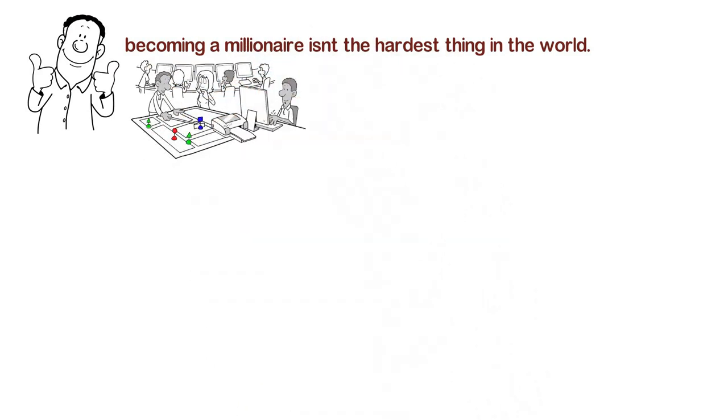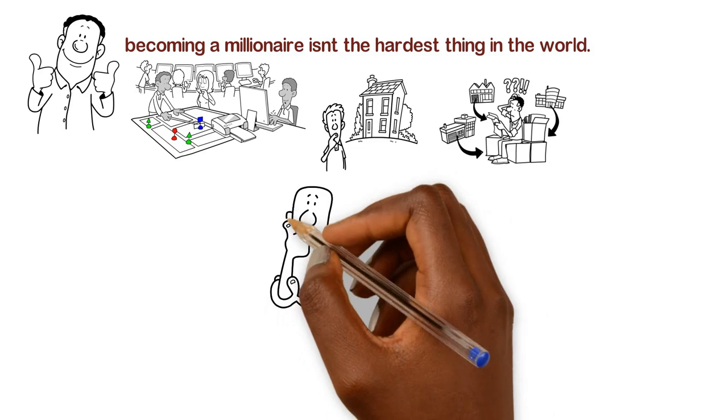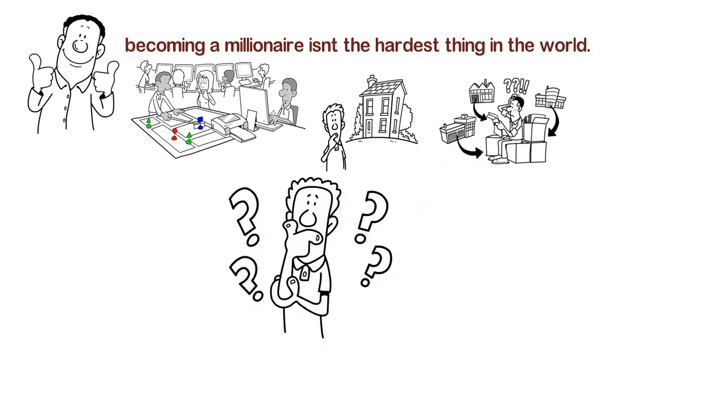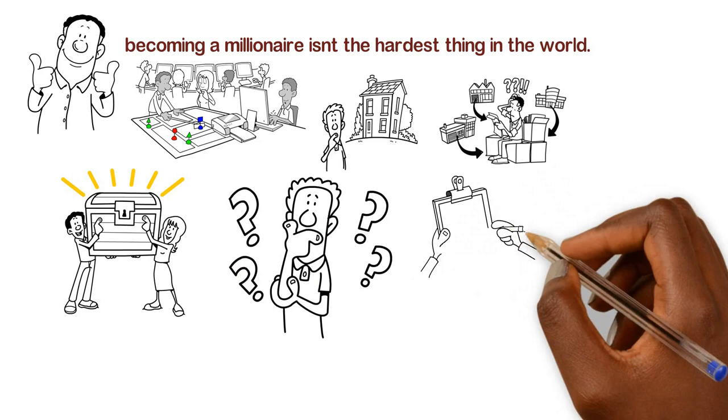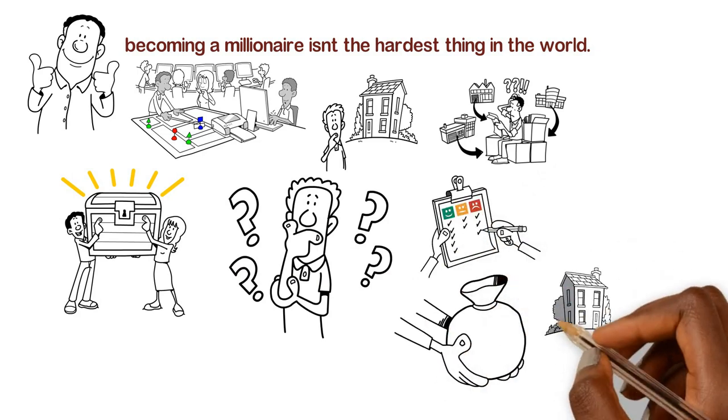So as it turns out, becoming a millionaire isn't the hardest thing in the world. It simply requires planning well, living below your means, and avoiding a few stupid mistakes. So how do we do this? If you're truly committed to unlocking financial freedom, start by using these three rules to improve your chances of ending up with a million dollars in the bank.